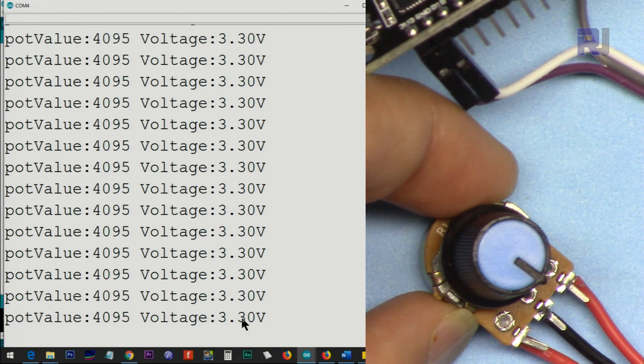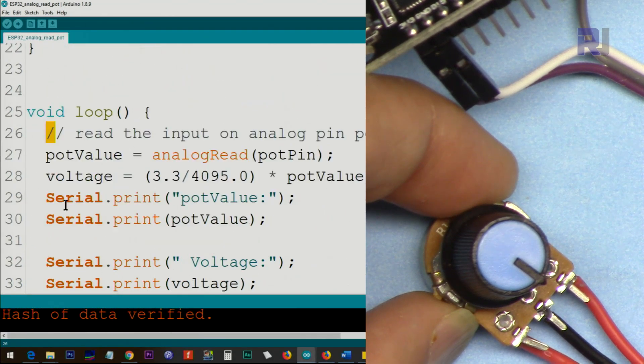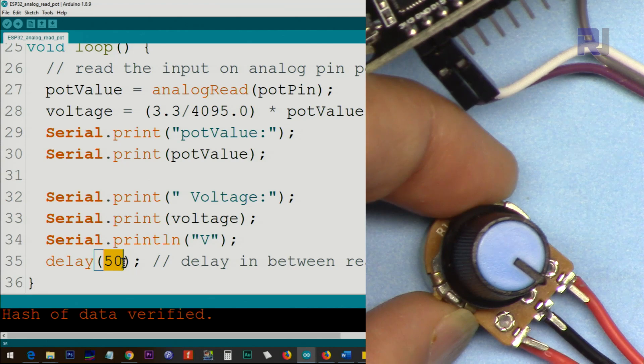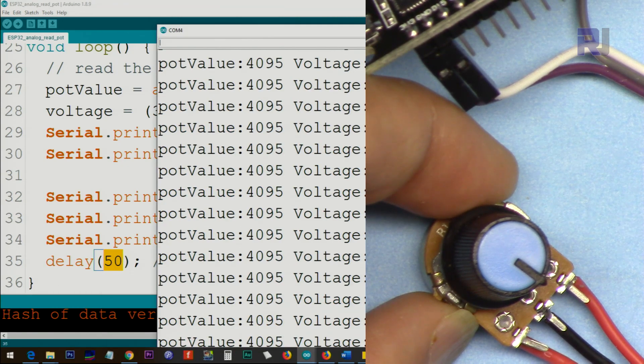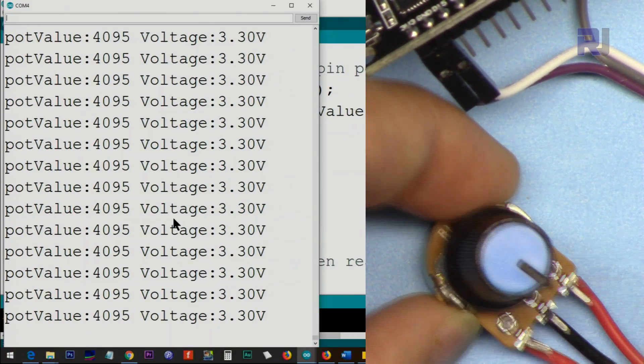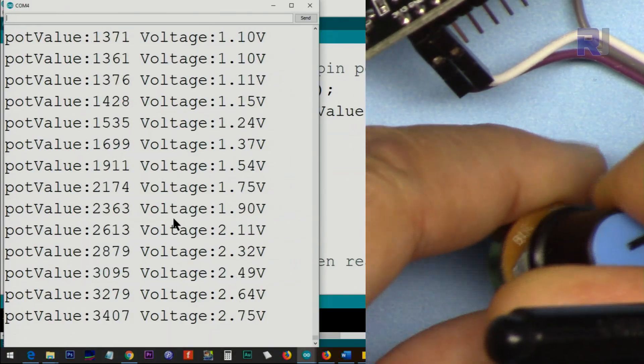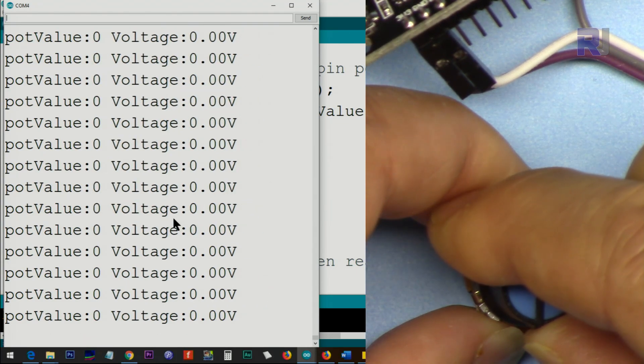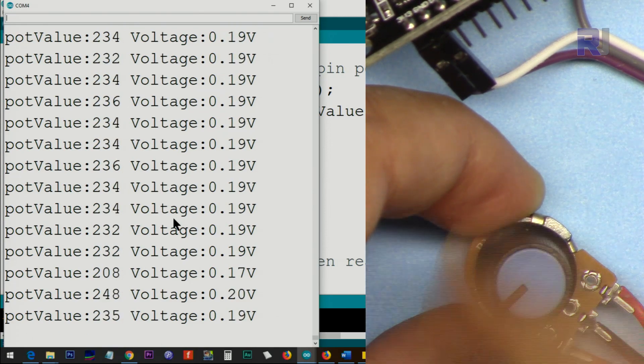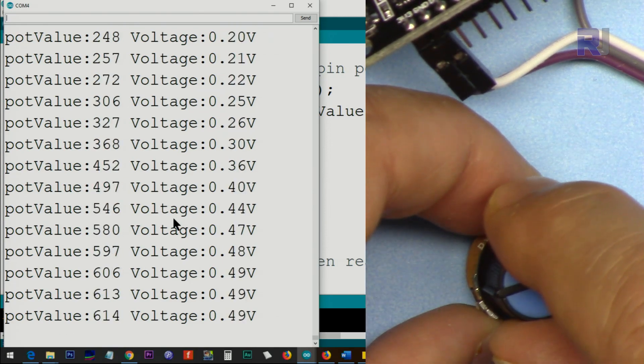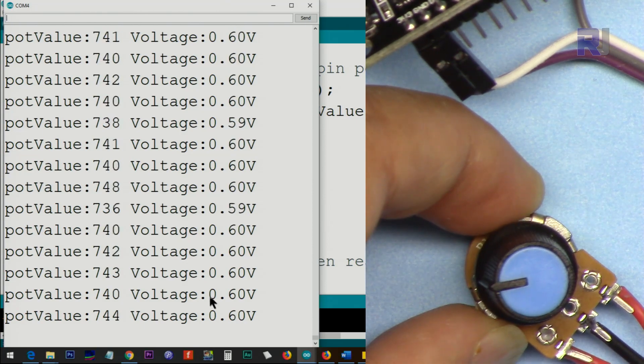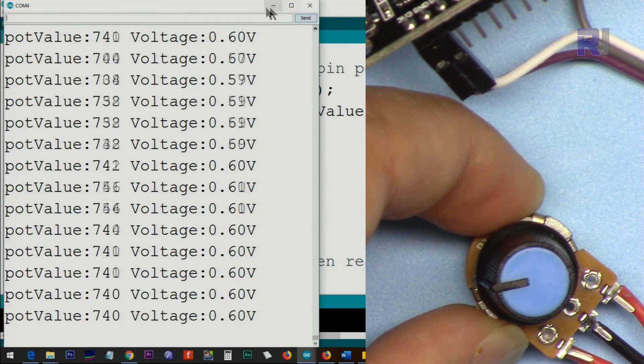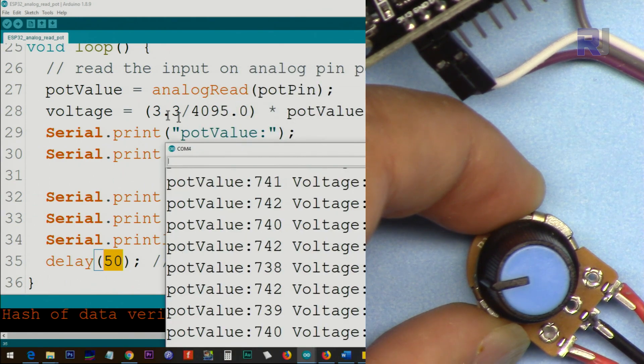This is just refreshing continuously because the value is read every 50 milliseconds and it's very responsive when I turn it, so it changes very quickly. 90 millivolts, 190 millivolts, 600 millivolts. Using this equation it's being calculated.